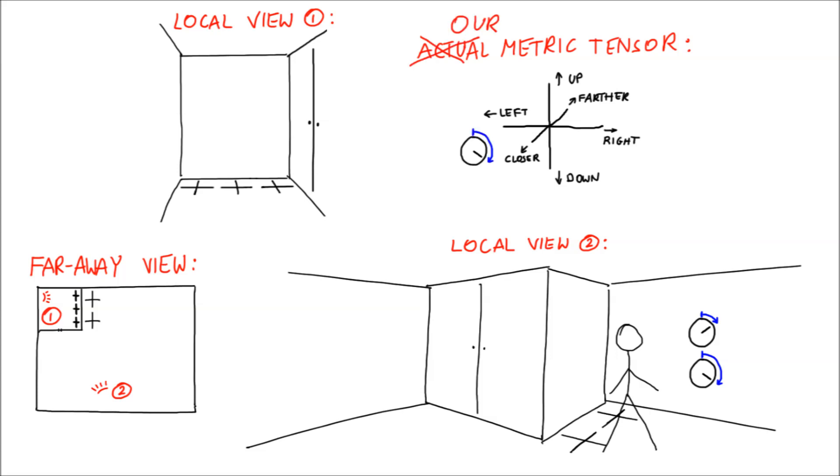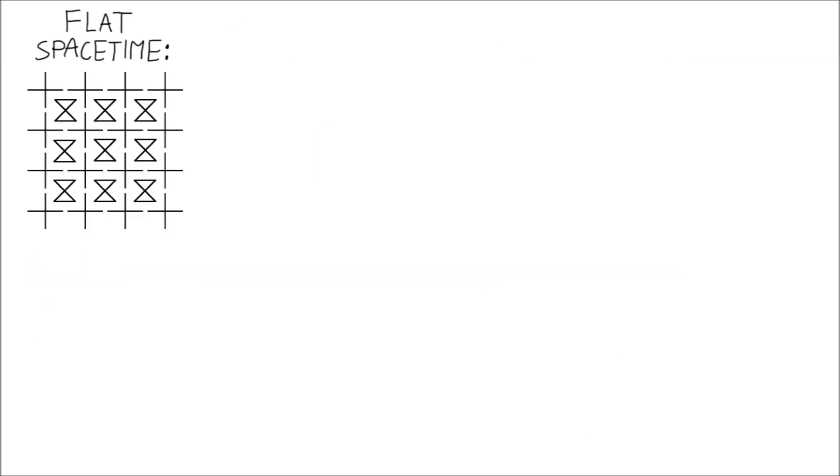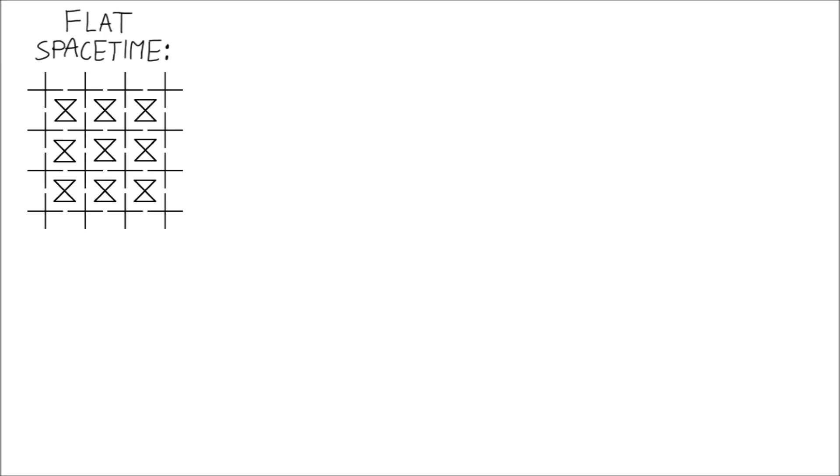So the actual metric tensor in general relativity shows how space is compressed in all three dimensions and how quickly time goes. However, for simplicity, we will ignore one dimension and display metric tensor as a cross and an hourglass. Smaller hourglass indicates slower time. Flat spacetime is when we can find a faraway view in which all metric tensors are the same and stay the same over time. Curved spacetime is when metric tensors change from place to place or from time to time.